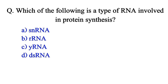Which of the following is a type of RNA involved in protein synthesis? Option A: snRNA. Option B: rRNA. Option C: yRNA. Option D: dsRNA. The correct answer is Option B: ribosomal RNA.